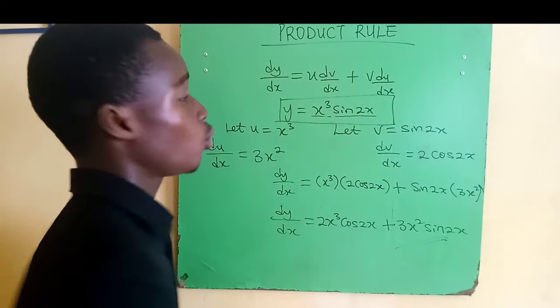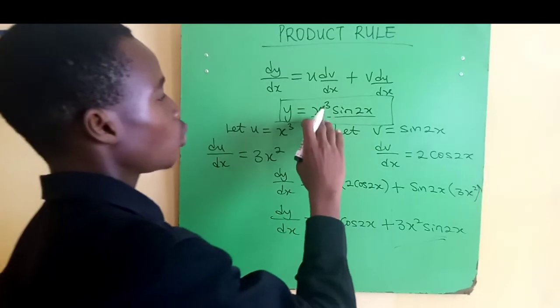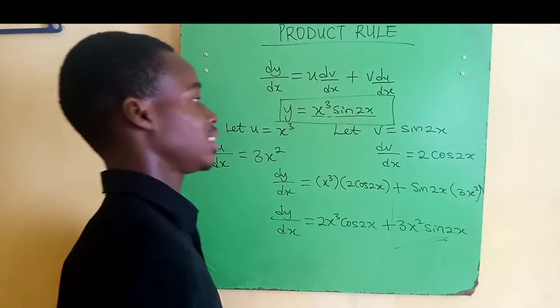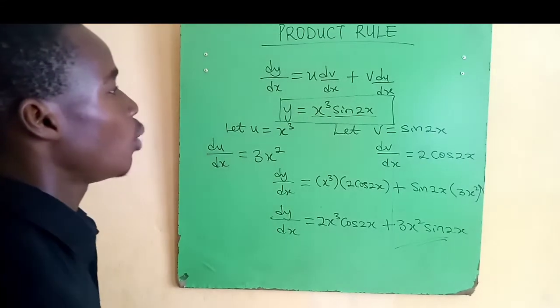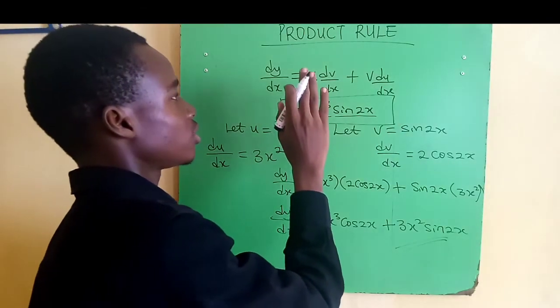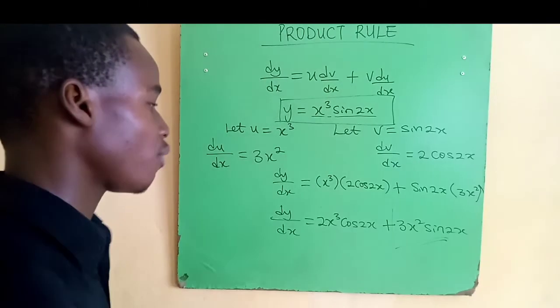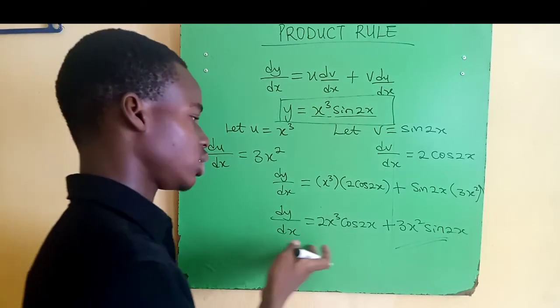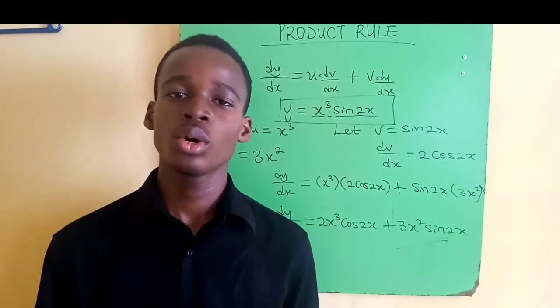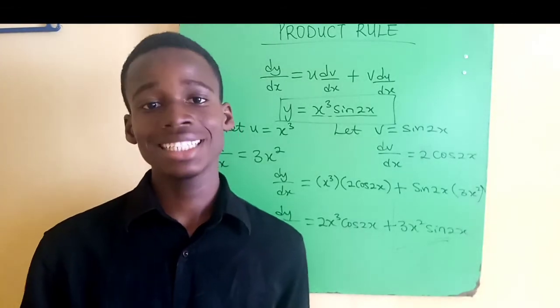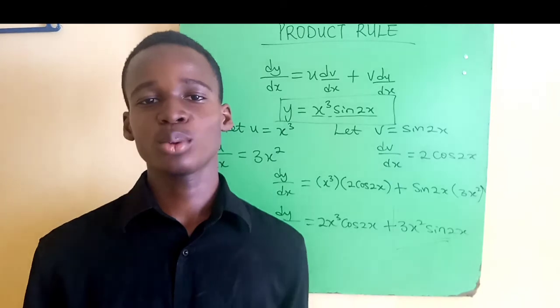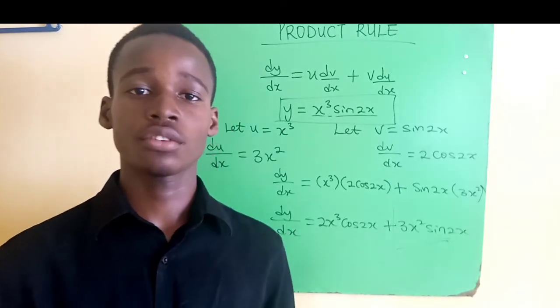So whenever we have two functions multiplying each other, we have x cubed and sine 2x, it can be any function. Whenever we have them multiplying each other, we use the product rule. And don't forget, you have to solve more questions to get more familiar with it. And this is how we got the derivative. I know you learned something during this video. If you enjoyed this video, we are here. To subscribe, kindly click on the subscription button to get notified each time we make a post. Make sure you share this video to your friends. A lot of them needs to watch this.